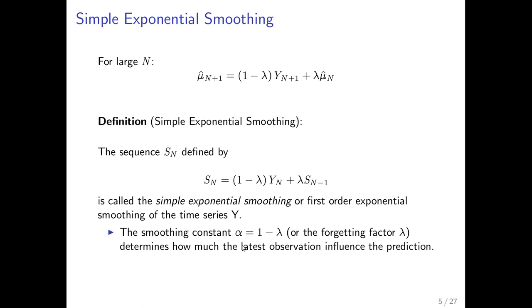We define the sequence s_n as one minus lambda times an observation, plus lambda times the previous estimator. So lambda is the factor multiplied on the previous estimator — the so-called forgetting factor. This is also called first-order exponential smoothing. The smoothing constant is sometimes defined as alpha equals one minus lambda, or as the forgetting factor lambda. Alpha is the weight on the most current observation, and lambda is the weight on the previous estimate.